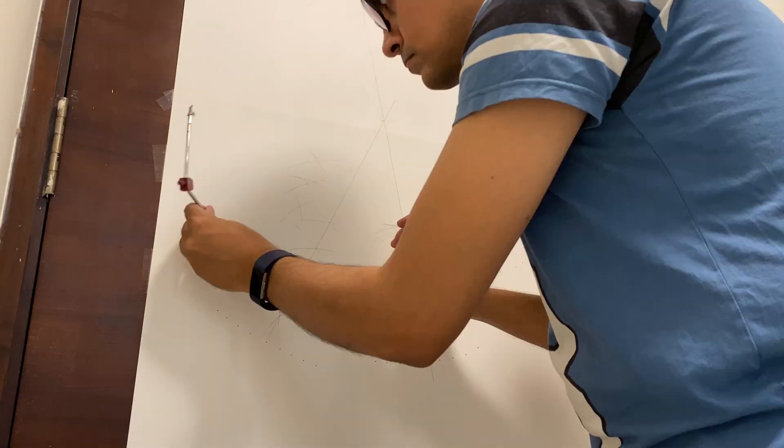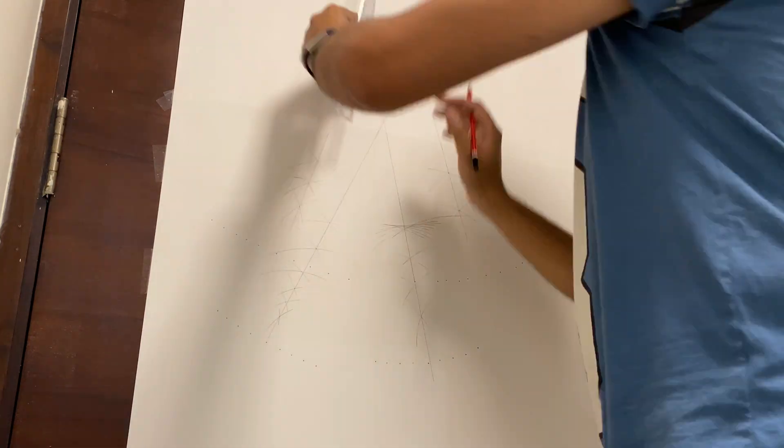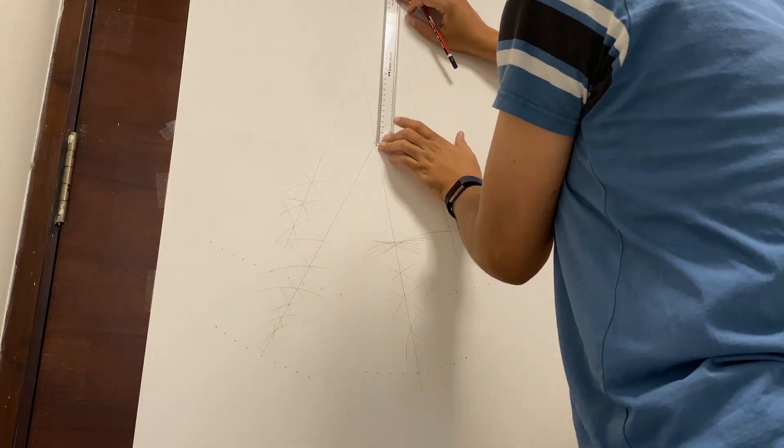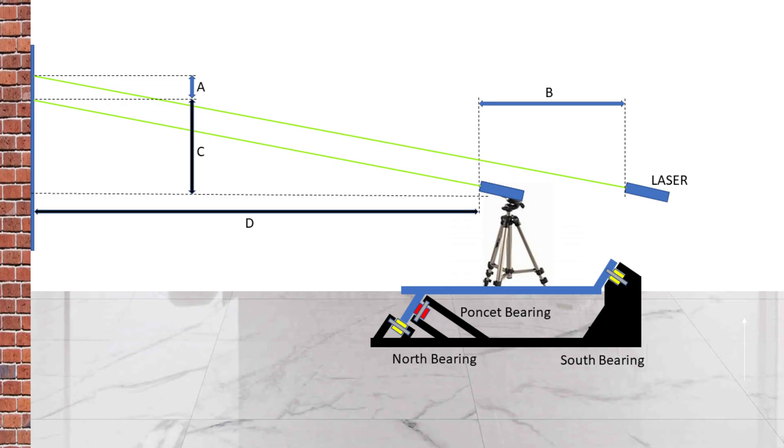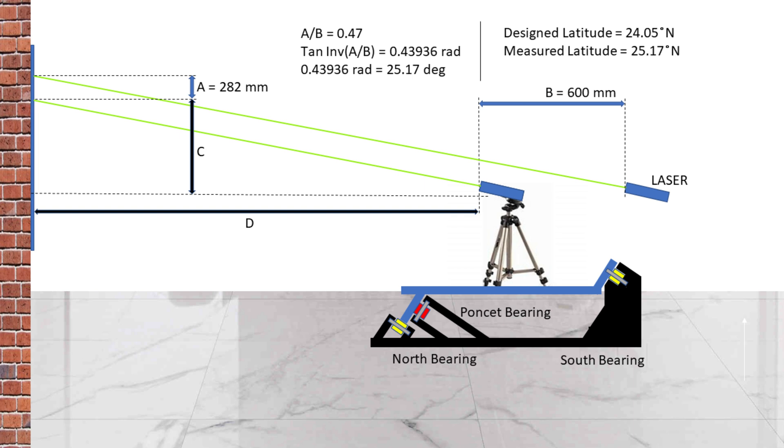Now using simple trigonometry, we will calculate the latitude of my equatorial platform. As you can see, I had designed my equatorial platform for 24.05 degrees north. However, the actual measurement we got is 25.17 degrees, hence the delta of 1.1 degrees.